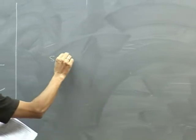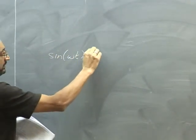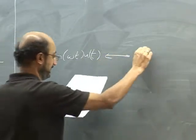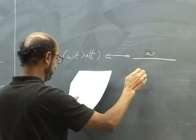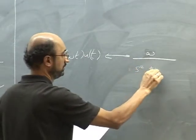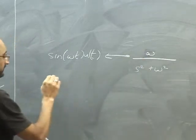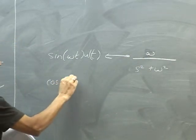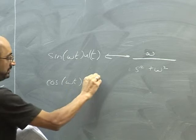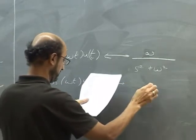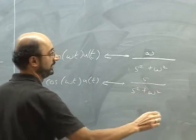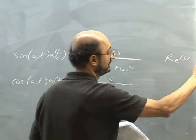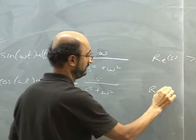Let me show you the last couple and then we can do the homework exercise. The sine — so sine(ωt)·u(t) — has the transform ω over (s² + ω²). And for both sine and cosine, the region of convergence is Re(s) > 0.